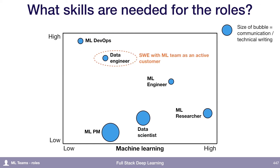Data engineers tend to work more actively with the machine learning team as a customer, because the output of their workflow is a data pipeline that is then used by the ML team. These folks usually have at least some affinity with machine learning — maybe they've studied it, maybe they've taken one class on it, and they're very close to the concepts.